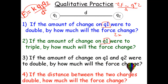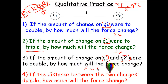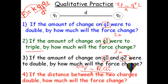What about if q1 were to triple? Well, by the same logic, three times. What about if q1 and q2 were both to double? We know that the force is directly related to charge one and charge two. If we double this one, we have to double the force; double the other one, we have to double it again. So two times two — it looks like four times the force.